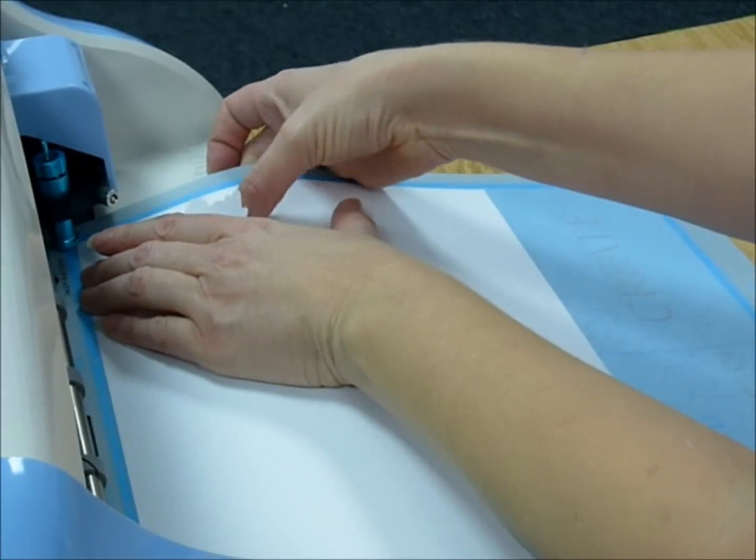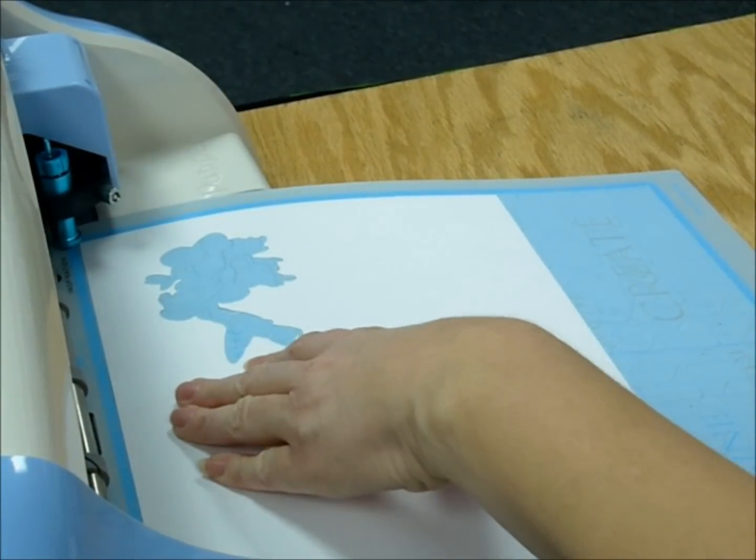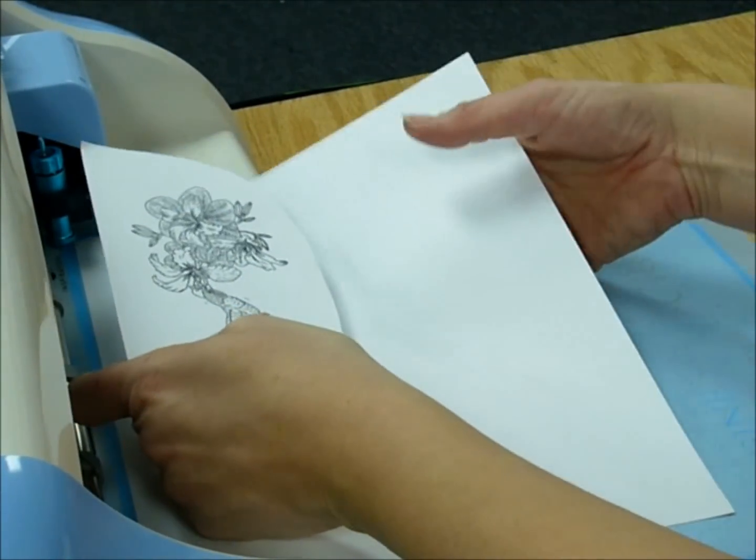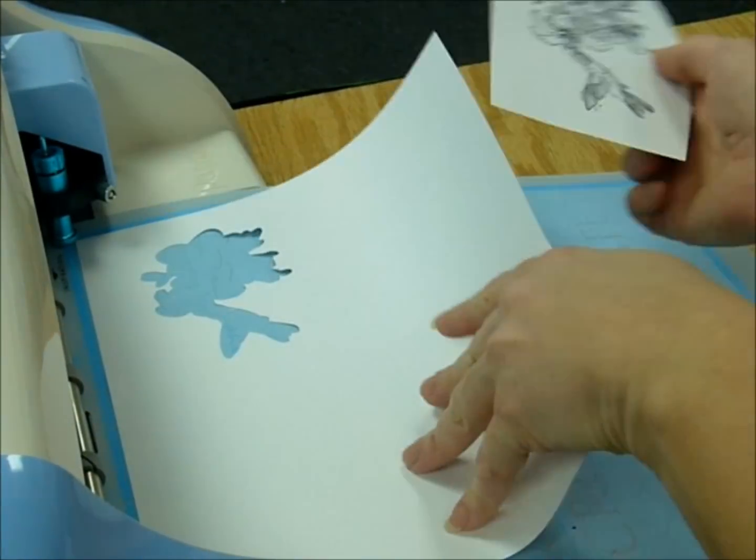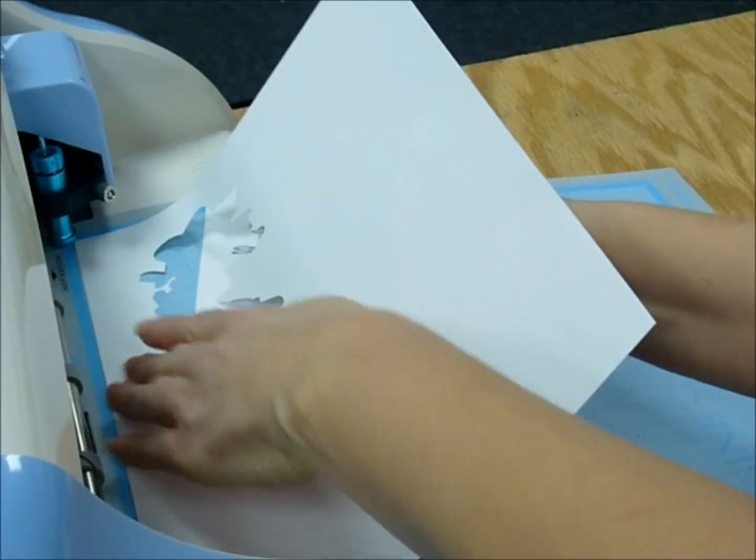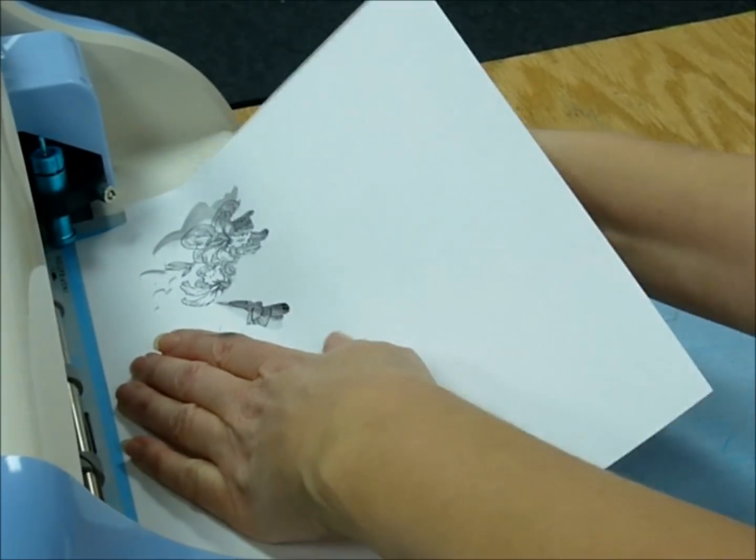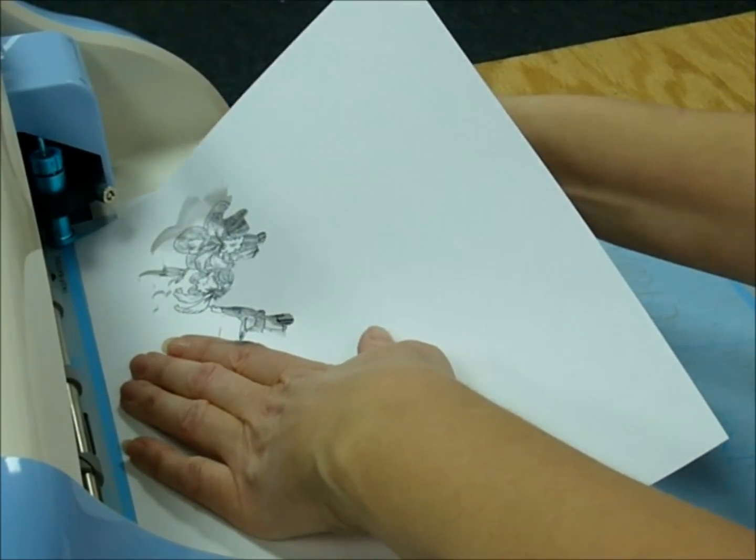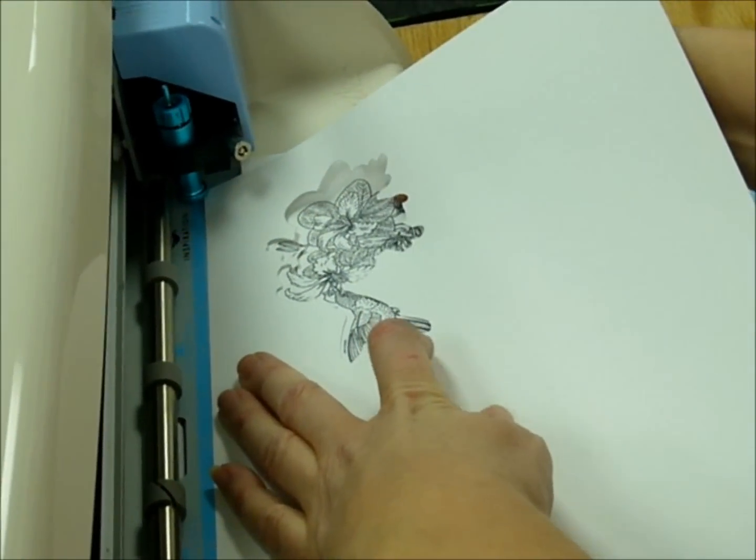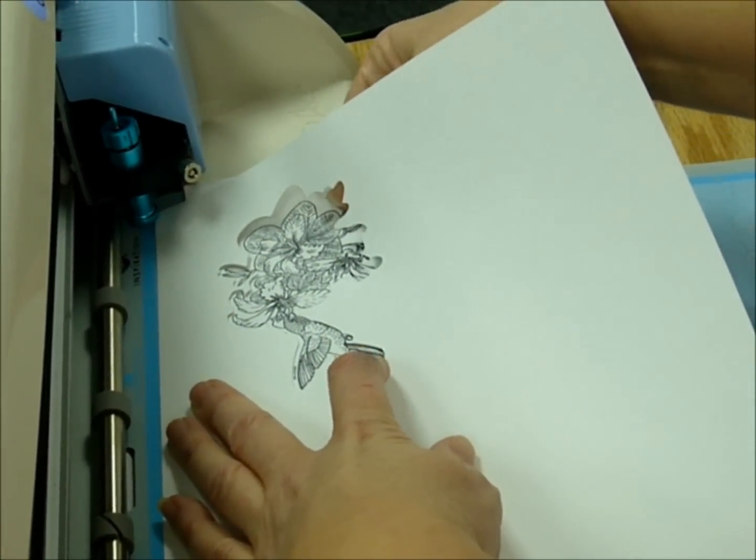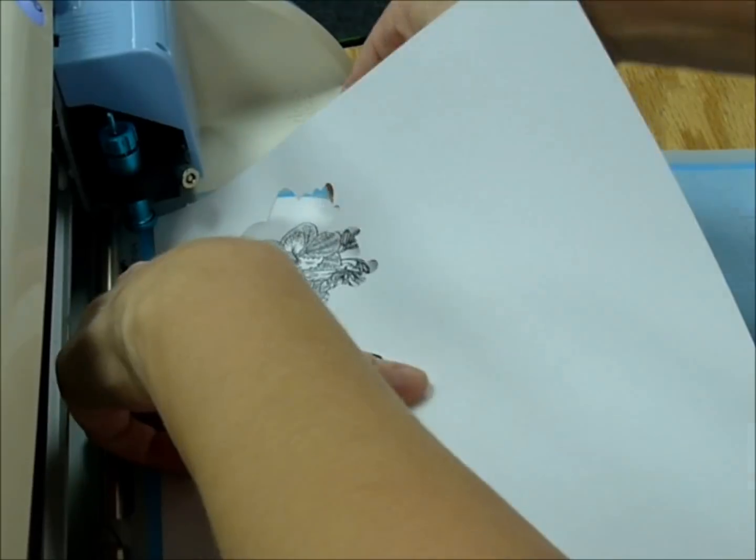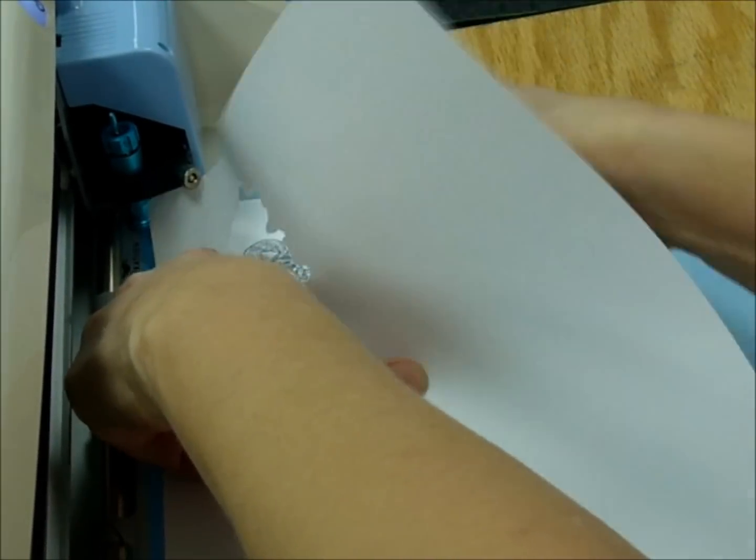Now this first cut, remember, do not remove the mat from the machine. If you've got a Cricut, hit load mat again. Do not hit unload mat because we don't want to move this at all. What I'm doing here is using this cut as a window to put in my stamped image. I'm just carefully maneuvering it in here and using this as a window.